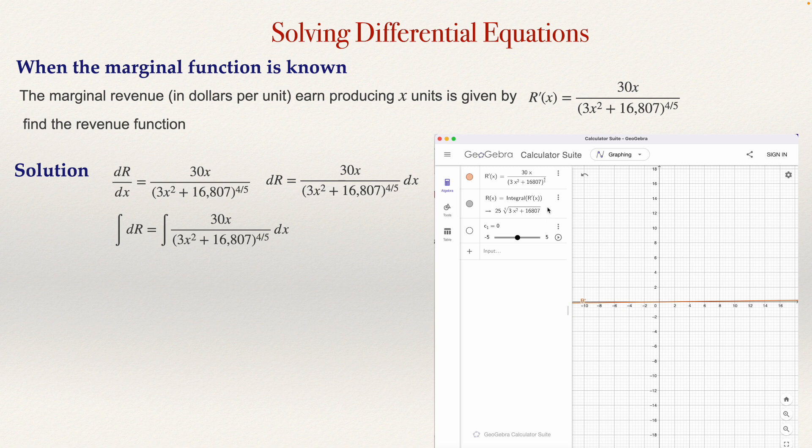GeoGebra doesn't give you the constant of integration. The constant of integration is given here, but I know that it will be c. I don't know what number will be the constant of integration. GeoGebra uses between -5 and 5 for the constant of integration. In this case, GeoGebra is using the constant of integration equals 0. But I know that there is a constant of integration, so the revenue will be 25 times the fifth root of (3x² + 16,807) plus a constant of integration c.